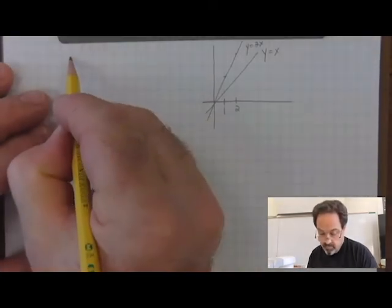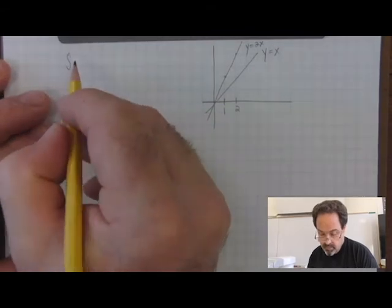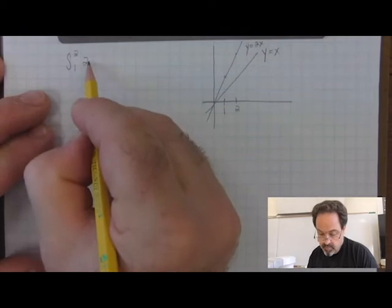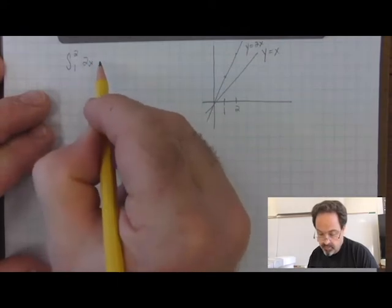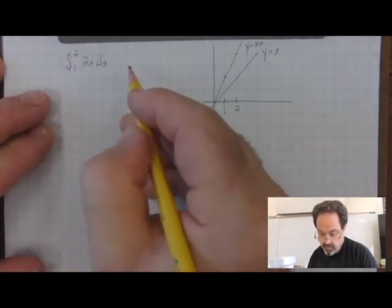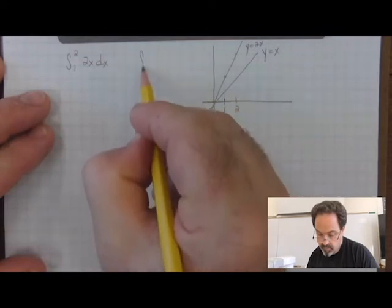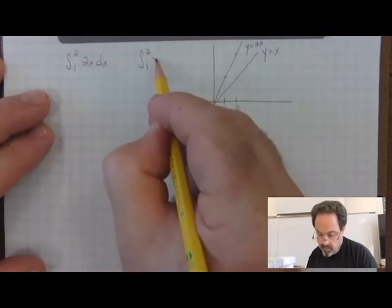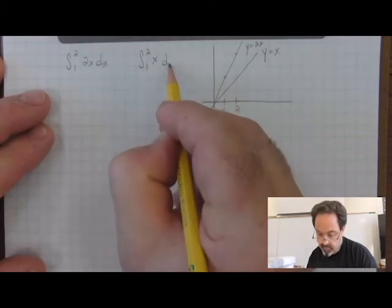I could represent this with integrals. The integral from 1 to 2 of the top function 2x with respect to x will compare with the integral on the same bounds from 1 to 2 of the bottom function x with respect to x.